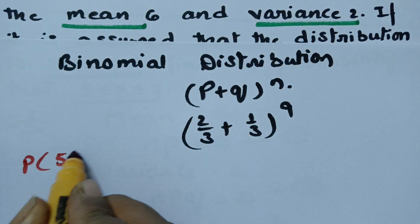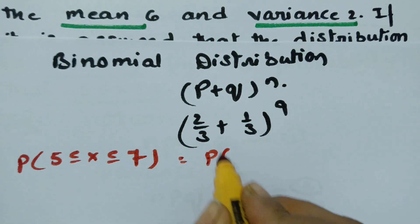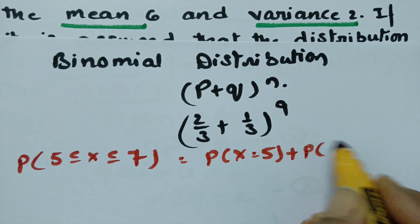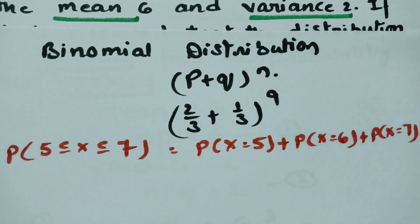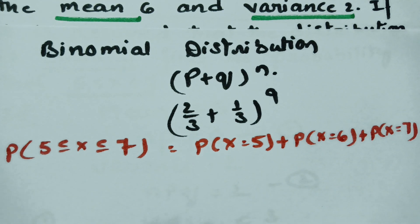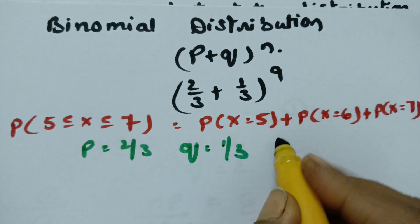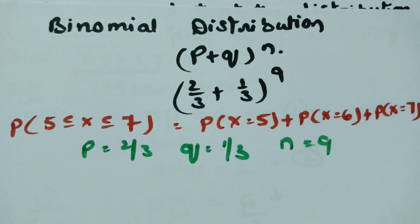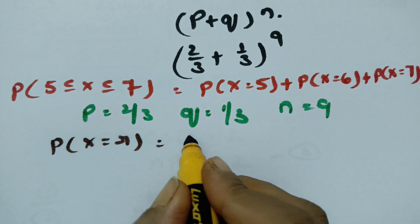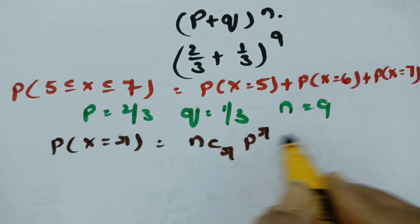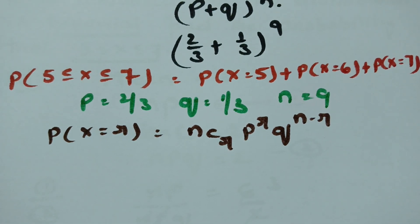P(5 ≤ X ≤ 7) = P(X=5) + P(X=6) + P(X=7). All the values are ready: P = 2/3, Q = 1/3, N = 9. According to the binomial distribution formula, P(X = R) = NCR × P^R × Q^(N−R).